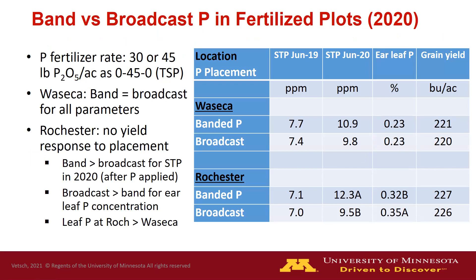This is the band versus broadcast comparison for phosphorus in the fertilized plots. These treatments had either 30 or 45 pounds of P2O5 per acre as triple super phosphate. At Waseca, there were no differences in soil test, ear leaf phosphorus, or grain yield — no response from band versus broadcast for any parameters. At Rochester, we didn't see a yield difference between band and broadcast, but the broadcast treatment had slightly greater ear leaf phosphorus than banded. Also, soil tests taken after the first application showed banded treatments were statistically greater than broadcast, which brings up the challenge of getting soil test data that accurately represents the field when using banding.